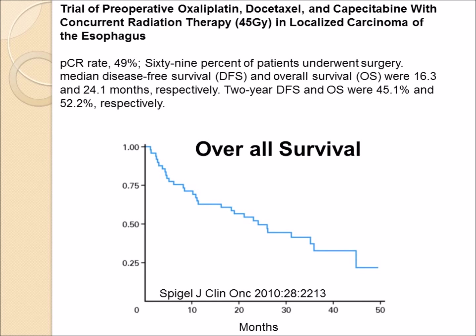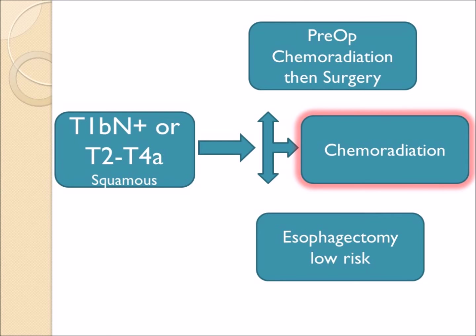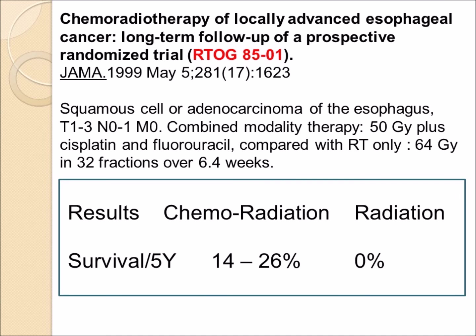If the patient responds very well to preoperative chemoradiation, the question arises: is surgery really necessary? Some patients may receive only chemoradiation and skip surgery. Early trials from the Radiation Therapy Oncology Group — the RTOG — such as the 8501 study, compared chemoradiation with radiation alone. No patients were cured with radiation alone, but with chemoradiation the five-year survival was 14 to 26%, roughly comparable to surgery.